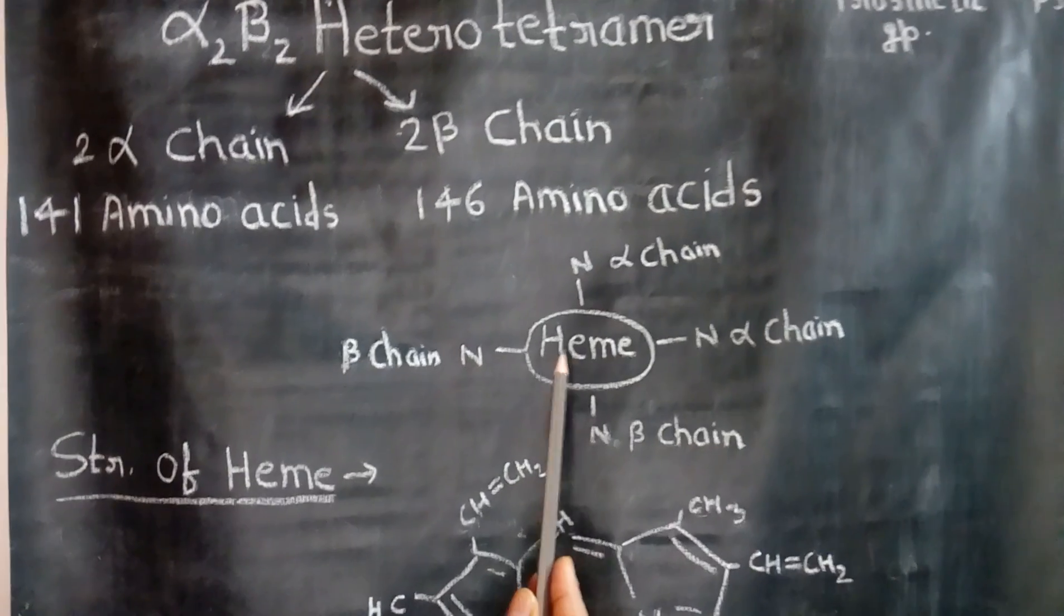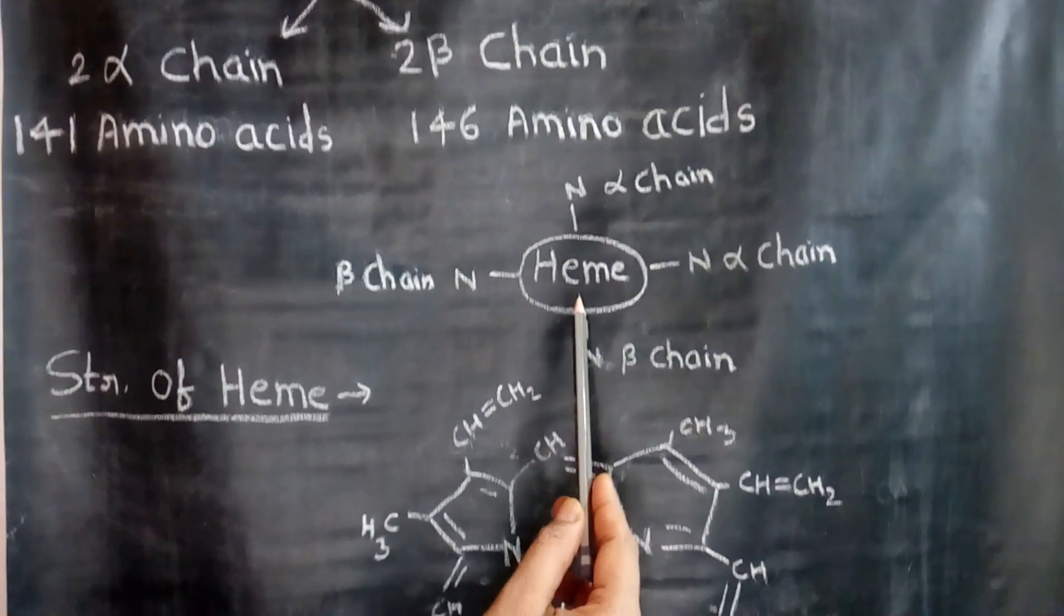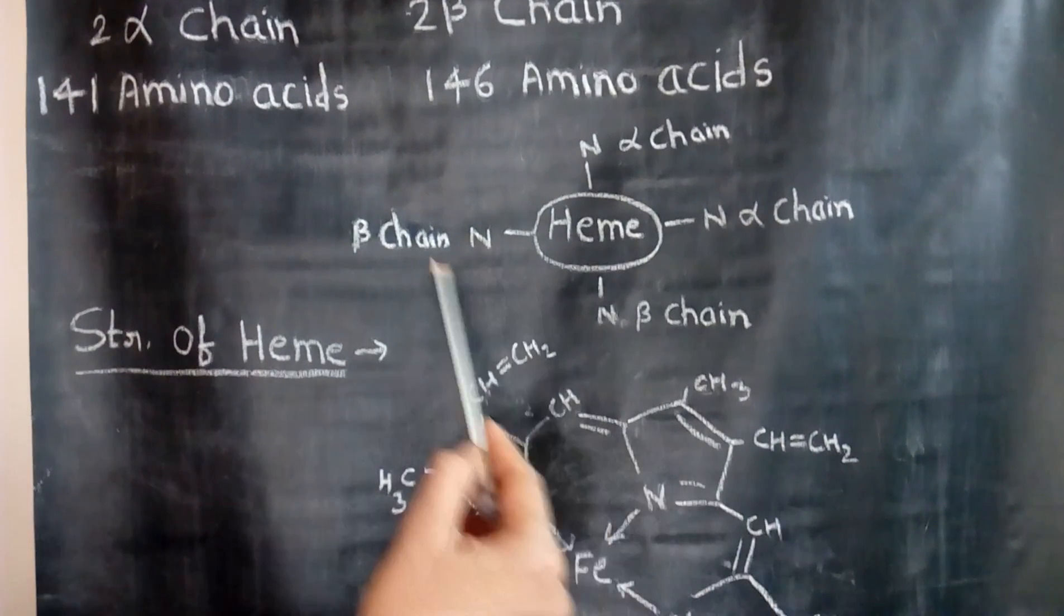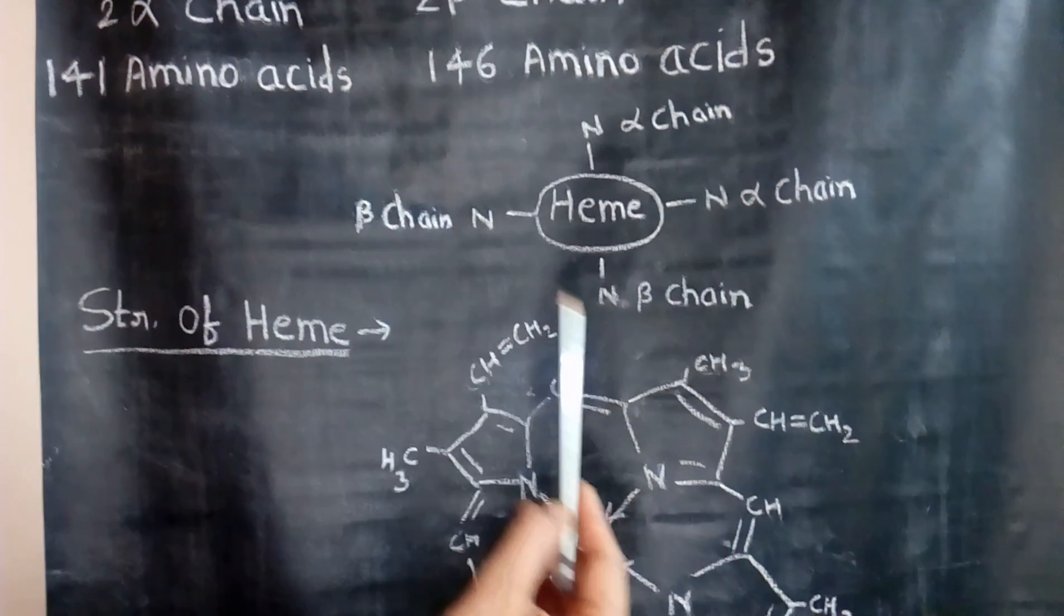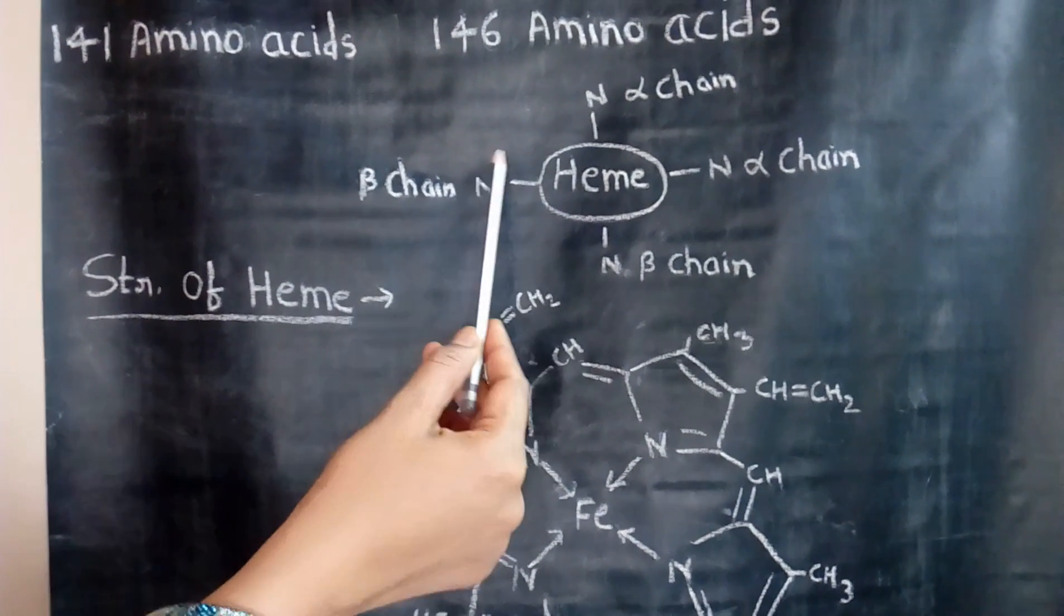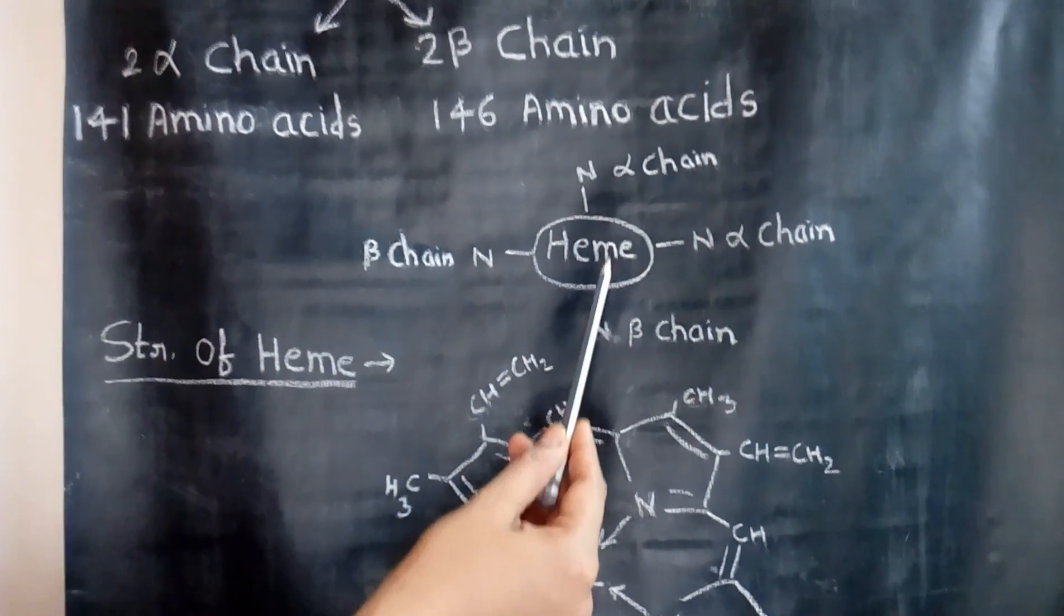So in the structure of hemoglobin, there is a heme group at the center attached to 4 protein chains, 2 alpha chains and 2 beta chains. The nitrogen atom of the histidine residues are attached to the iron atom.